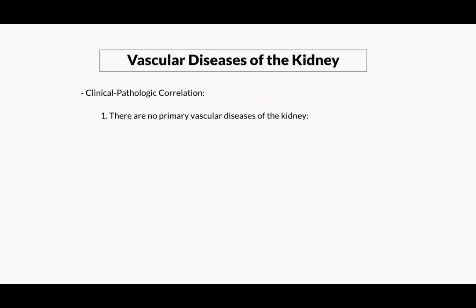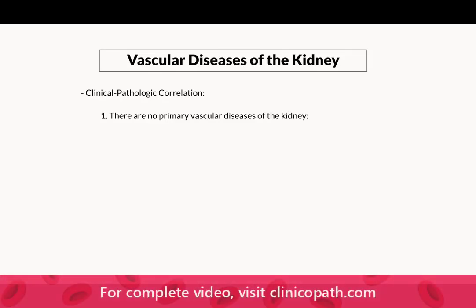Hello and welcome to ClinicalPath.com. Today's topic is Vascular Diseases of the Kidney. This is an important clinical pathologic correlation to understand. There are no primary vascular diseases of the kidney. Rather, you should think of it as systemic vascular diseases that involve the kidney.